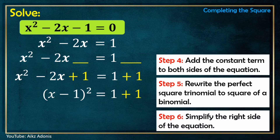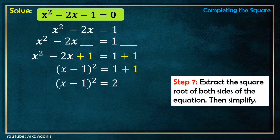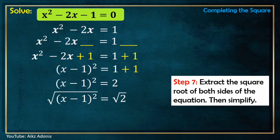Step 6: Simplify the right side of the equation. So 1 + 1 = 2. Step 7: Extract the square root of both sides and then simplify. We take the square root of (x - 1)² and the square root of 2. The square root of (x - 1)² is x - 1, and the square root of 2 is ±√2.